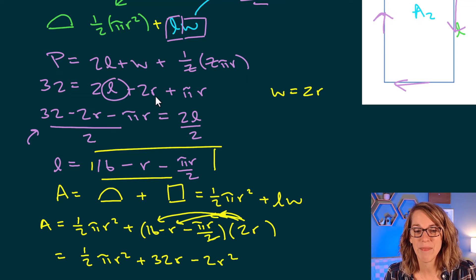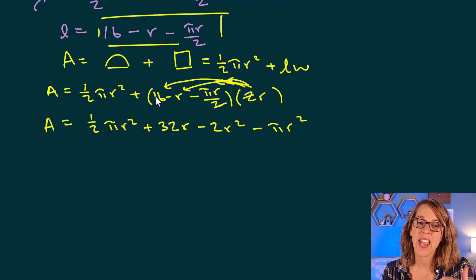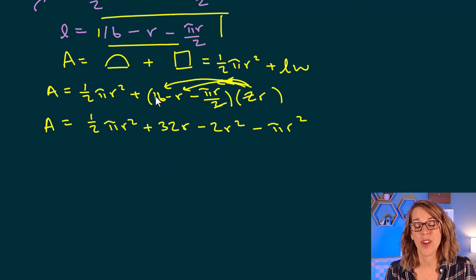So minus pi r squared. So now I've got my area all in terms of r and it happens to be a quadratic. I know that the maximum value for that quadratic is going to be that vertex.